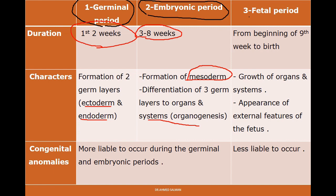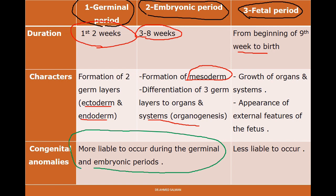The third stage is called the fetal period; it starts from the ninth week till birth, and includes the growth of the embryo, growth of the organs, and appearance of the external features of the fetus. Congenital anomalies are more liable to occur in the first and second periods — from the first week till the eighth week. The fetal period is less prone to congenital anomalies.